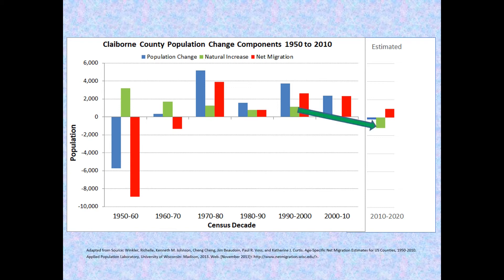The trend of declining natural increase continues and goes more negative. Net migration also shows a trend of decrease. This results in decrease in population change to negative for the last decade.